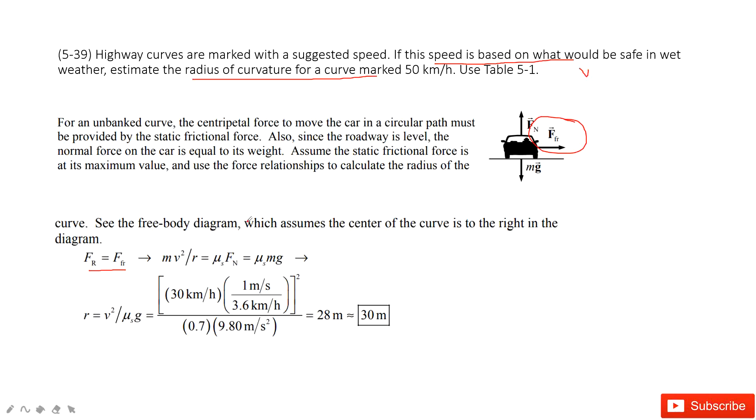In this one, we can find the radius of the curve. To solve this equation, we find r equals this function. And in this function, v is given, μs is given, and g is given. So we can find r as 30 meters.